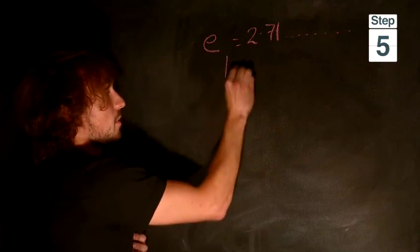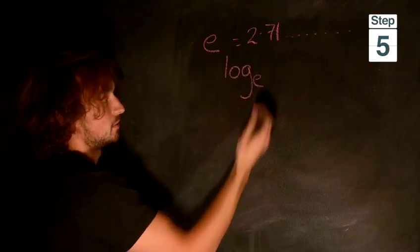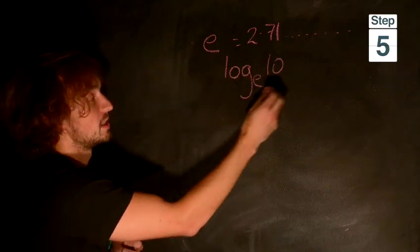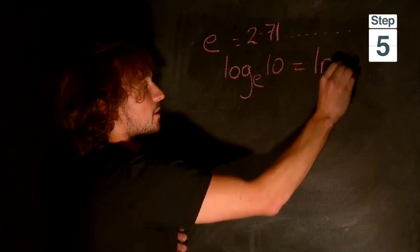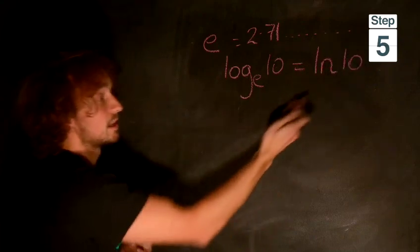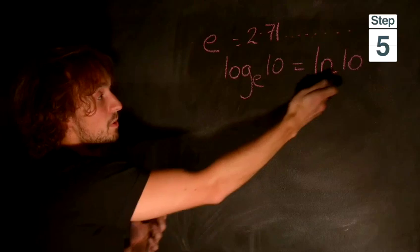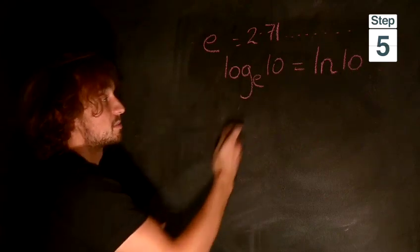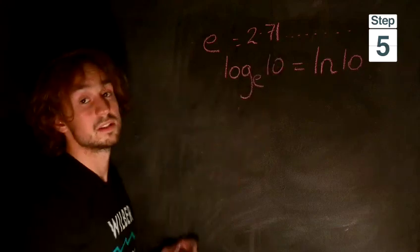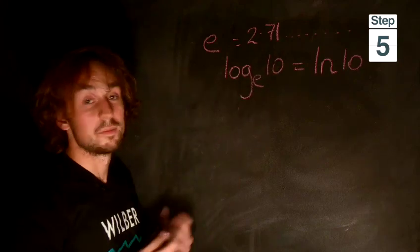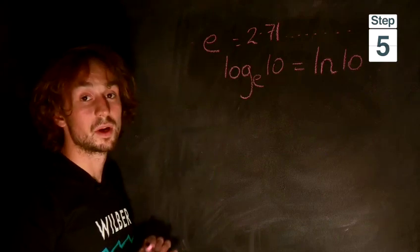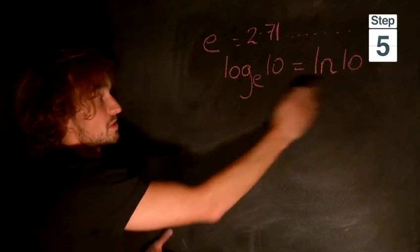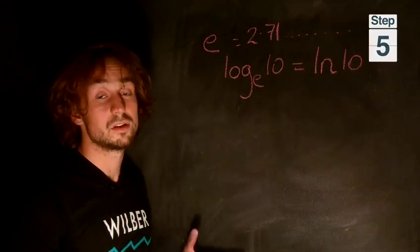The way we write log base e of, say, 10, instead of writing log base e, we write ln 10. That literally means the natural logarithm of 10. That's all you need to know about e. It's exactly the same principle. This means e to the power of what is equal to 10. You can put it in a calculator and work it out. And that's how to use logarithms.